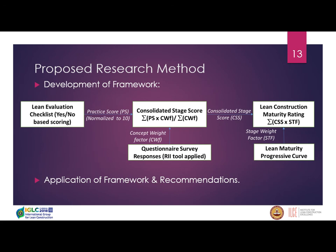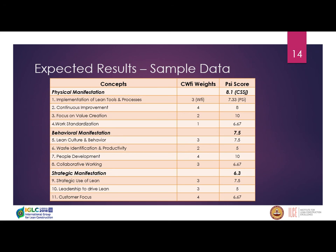After connecting those three elements, we developed a framework. It starts with a lean evaluation checklist divided into three levels. From there, we move to the consolidated stage score, where the weightages are multiplied to get a score. Finally, the consolidated score is used in the lean maturity progressive curve. Sample data shows how stage-wise scores can be derived by performing a weighted average.